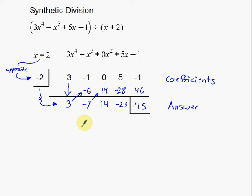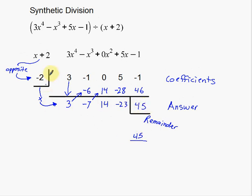But now from here we need to rewrite our answer. This number in the box over here — this one is unique. This is the remainder. So if you remember from our polynomial long division example, our remainder gets written like this: we write it as 45 over what we're dividing by. In this case we are dividing by x plus 2, so that's what our remainder is.